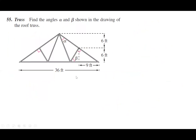Alright, on to number 55. Number 55 is a truss. If you ever went up to an attic in your home, you should see something like this — this is a standard roof truss. The attic is right inside here. This is usually the point of a sloped roof going down. The reason we make these is because of this little piece that comes in at a 90-degree angle each time, giving a whole bunch of support structure.